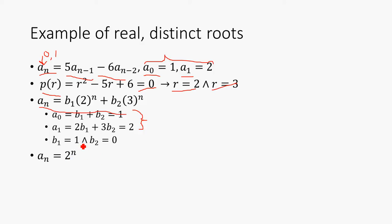And as a result, we solve the system. We get that b1 equals 1 and b2 is 0. So this is the recurrence.